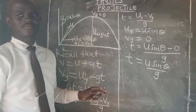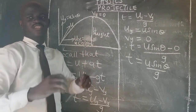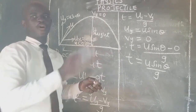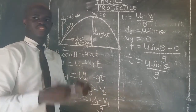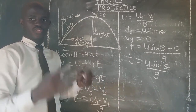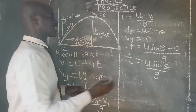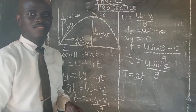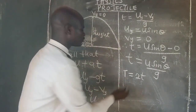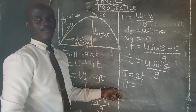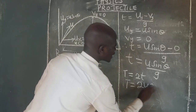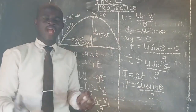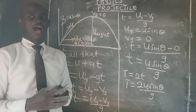The time of flight, denoted by capital T, is the total time taken by the projectile from the point of projection back to the landing point. Time of flight is twice the time to reach the maximum height. Therefore, T = 2U sin θ / g.